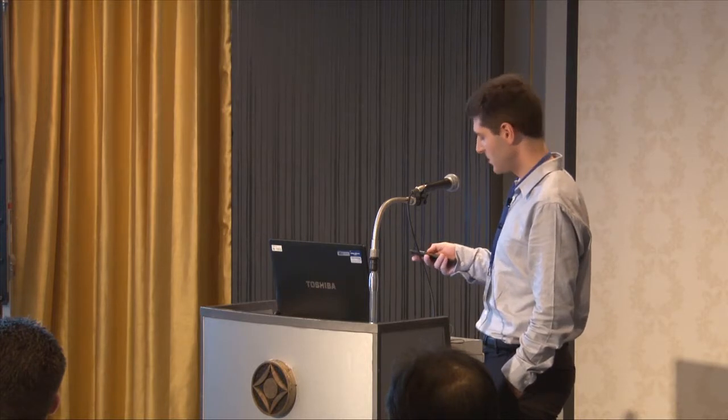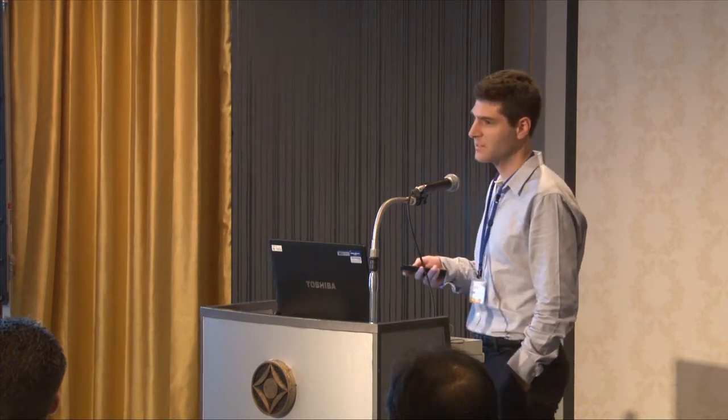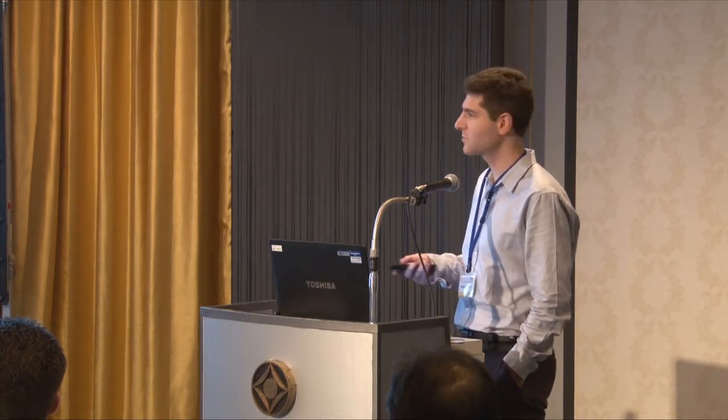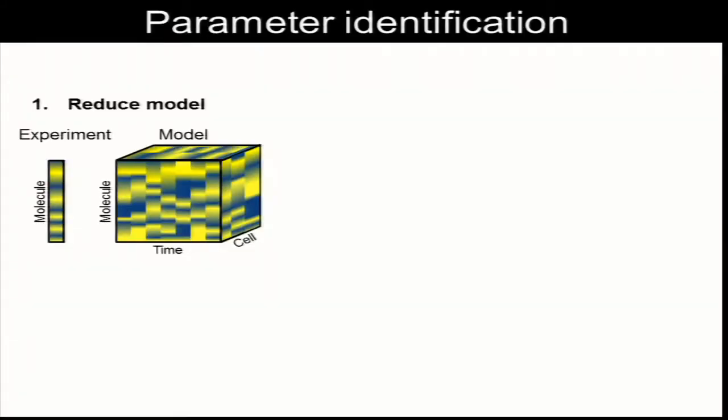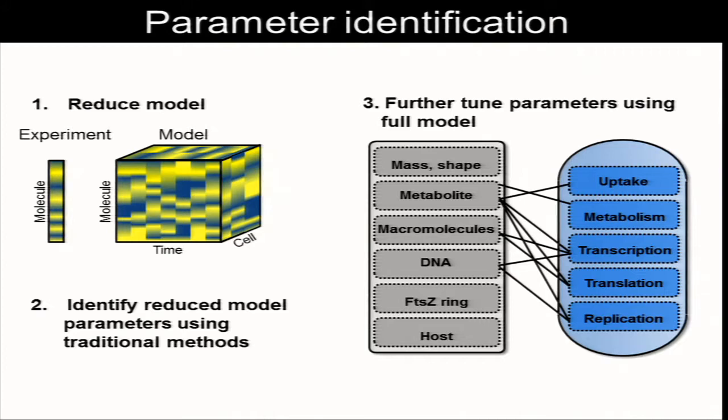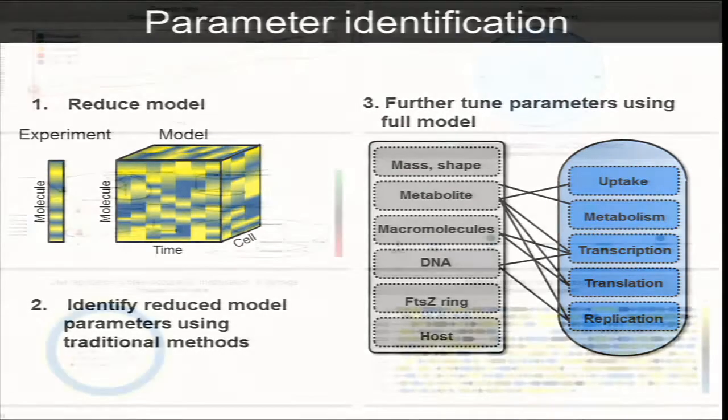One way that you can attempt to reduce the complexity of this problem is to use what we call reduced models. The basic idea is that rather than using the computationally expensive model, you replace that with something which is less computationally expensive but which is an approximate version of your full model. Then you apply numerical optimization to identify the values of your parameters with this reduced model and simply plug them back into your full model. If you need to, you can manually tune some parameters in your full model.